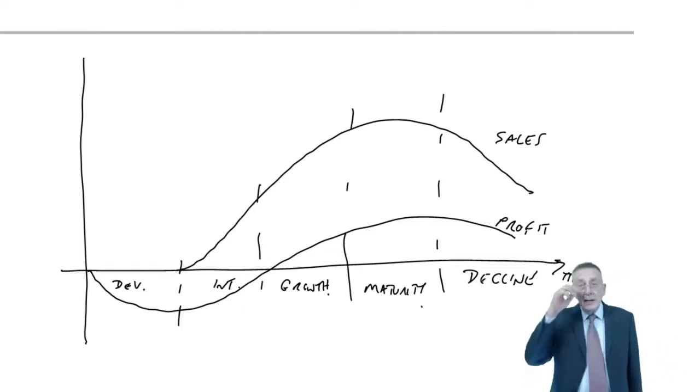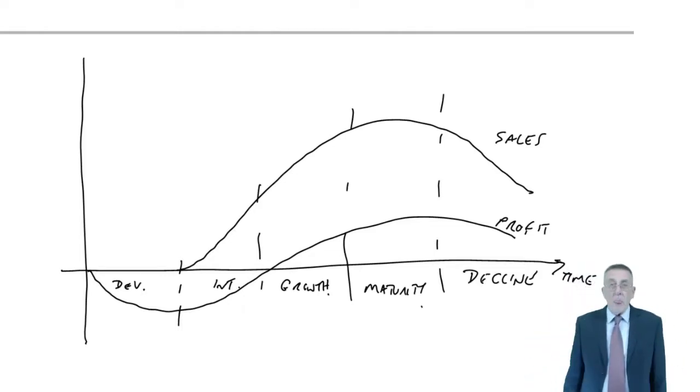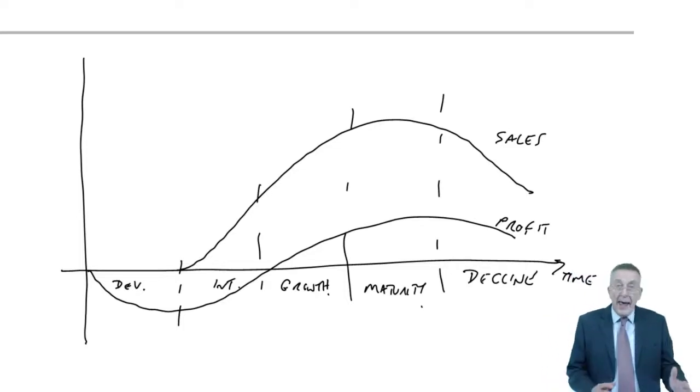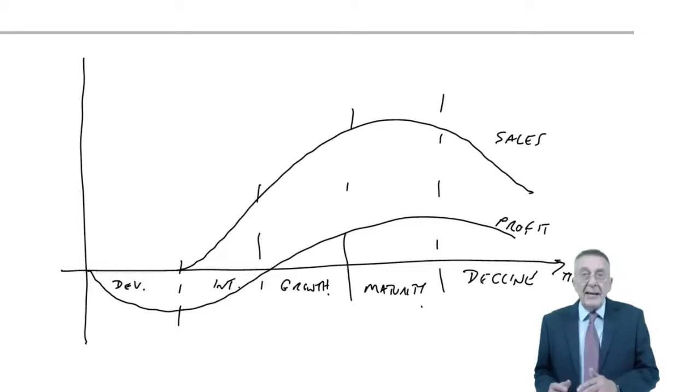Sales fall, profit falls, and eventually we're going to stop making it. You won't be asked to draw that graph. I suppose you could be given it and asked to explain it, but you certainly expect to be aware of the different phases and the relevance of them.